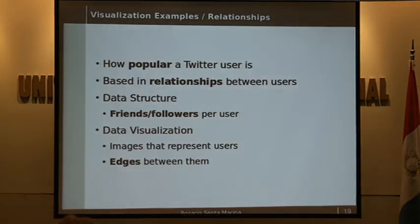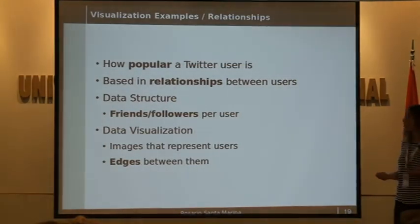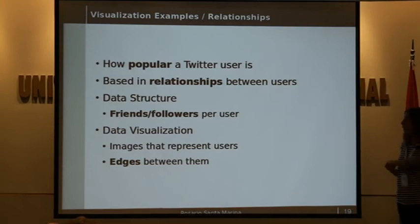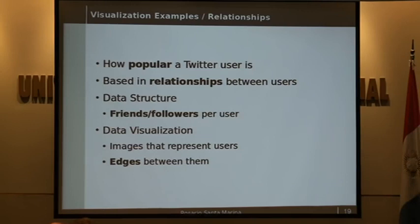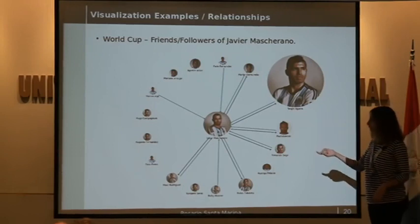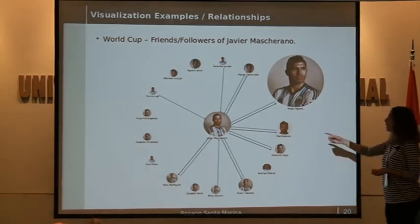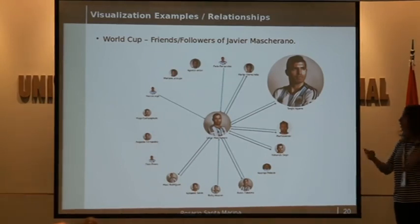The last example I have is not related to social TV, but it's interesting to show. It also shows how popular a user is, but using different parameters. It uses the friends and followers of each user and draws the different relationships between them. Here, we chose the friends and followers of Javier Mascherano, because in this kind of visualization, if we use all the information for each user, the visualization becomes too complex and cannot be readable.